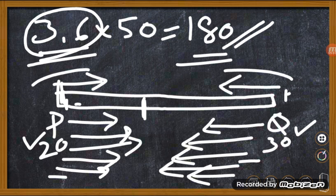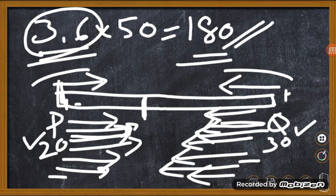By the time they meet each other, Q has covered 36 km more than P. P is equal to 1.00 and Q is equal to 1.00. QP plus 10 km is equal to 1.00. If they cover equal distance, the distance will be equal to 10. If you have a 3.6 difference, the time is 3.6 by 10.